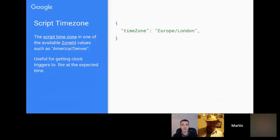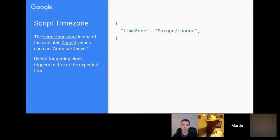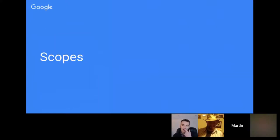Something that often catches people out: if you've got a container-bound script, the time zone can be set in the spreadsheet and also in the script, or the doc where you've bound your script. That can cause confusion because you can have different time zones — one for the script and one for whatever the container-bound application has.